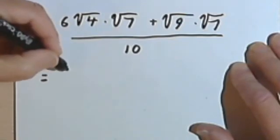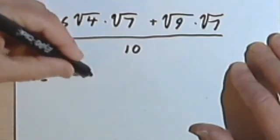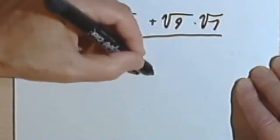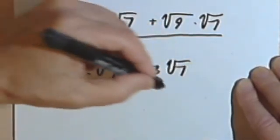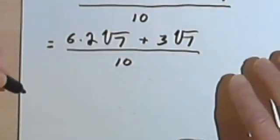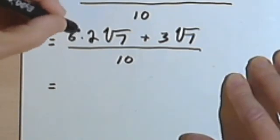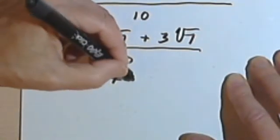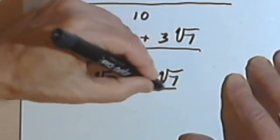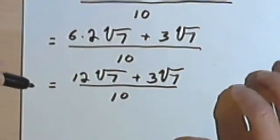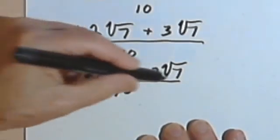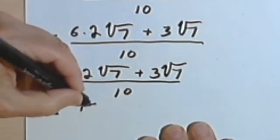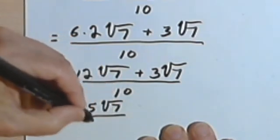Taking my square roots: 6 times the square root of 4, which is 2, times the square root of 7, plus 3 — the square root of 9 — times the square root of 7, everything over 10. Carrying out my multiplication: 6 times 2 is 12 times the square root of 7, plus 3 times the square root of 7, over 10. I can now combine the two square roots since they're both the same: 12 plus 3 is 15 times the square root of 7, over 10.